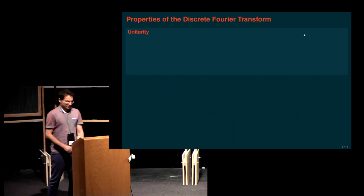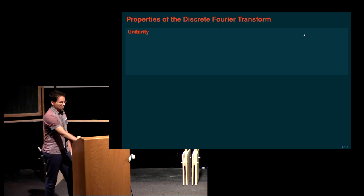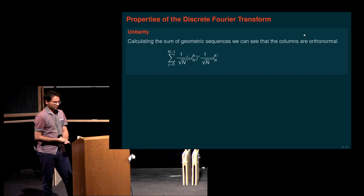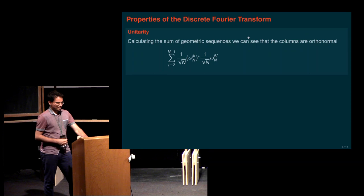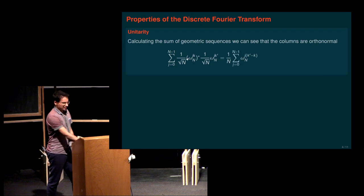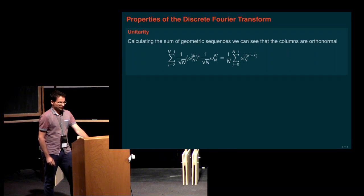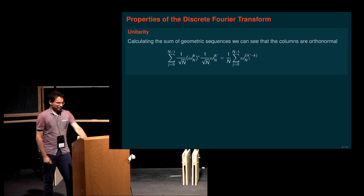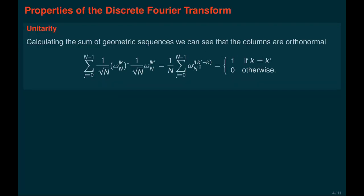A very important property of the discrete Fourier transform is that it's a unitary matrix. You can see this by computing the inner product between the k-th and k'-th columns. Taking the complex conjugate means putting a minus sign in the exponent of this root of unity, giving omega_N^{-jk} times omega_N^{jk'}. Combining the exponents, this equals one if and only if k equals k', and otherwise it will be zero.